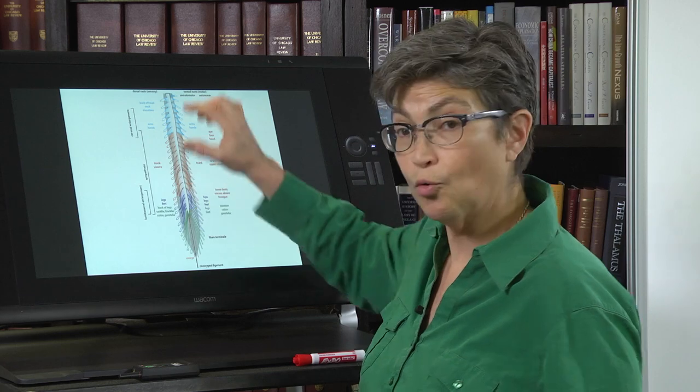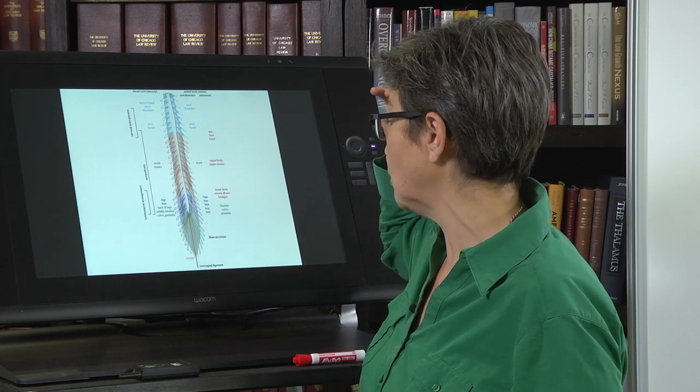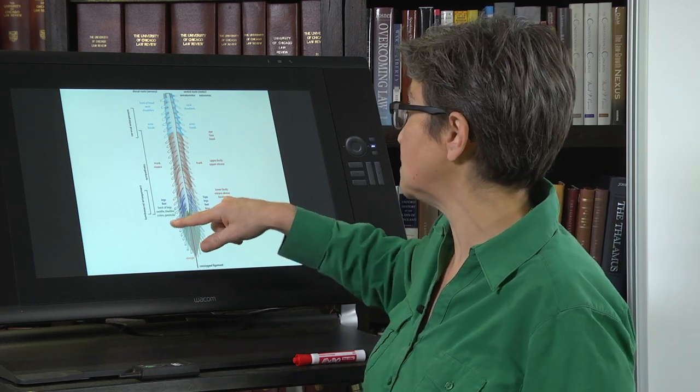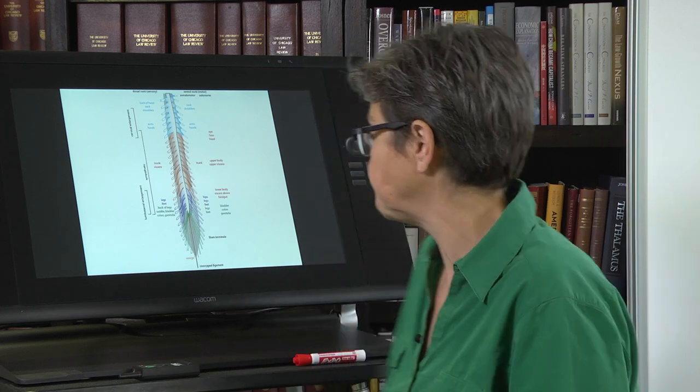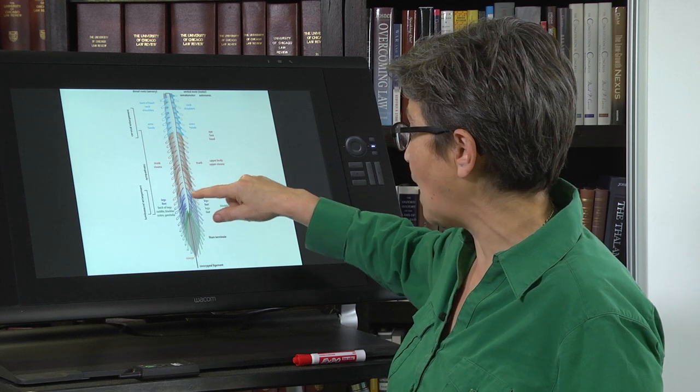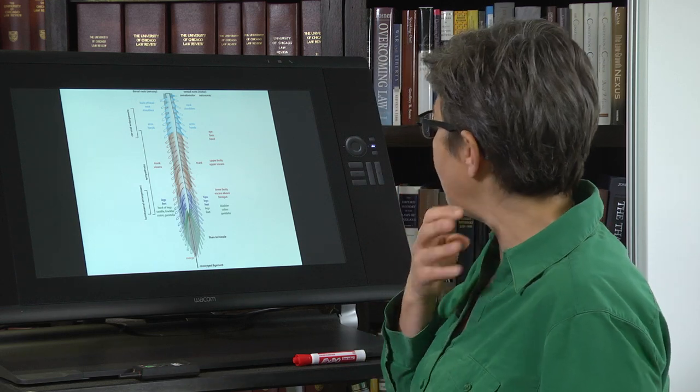The lumbosacral, which we will group as a group, the lumbosacral region of the spinal cord deals with the legs, the feet. And then as you get back into sacral segments, it includes the saddle area, the bladder, the colon, and the genitalia. So sensory information from all the pelvic floor organs. Motor information coming out of the lumbosacral cord goes to the hips, the legs, the feet, and that's it.